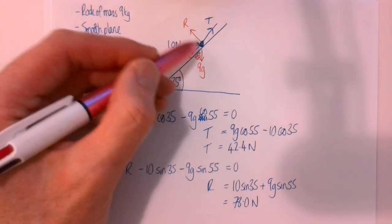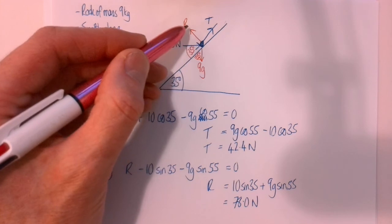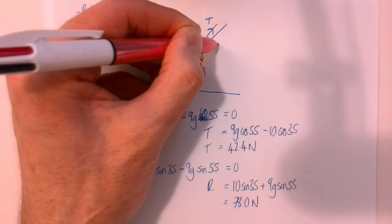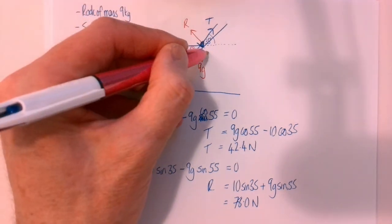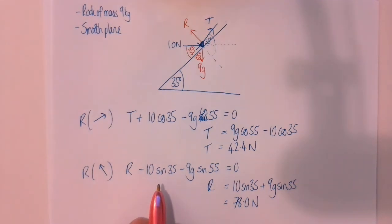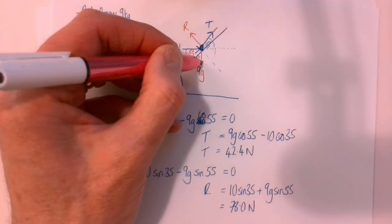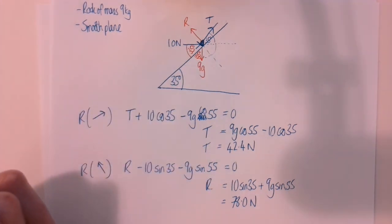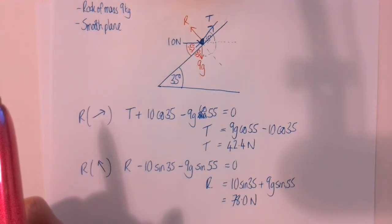Resolving perpendicular to the slope: R acts directly away from the slope so there's no angle involved. Two forces act against it: the component of the 10-newton force, which is 10 sin 35 (angle unknown in that direction), and the perpendicular component of the weight, which is 9g sin 55 (or cos 35). So R − 10 sin 35 − 9g sin 55 = 0. These slopes problems are tricky and worth spending time practising.